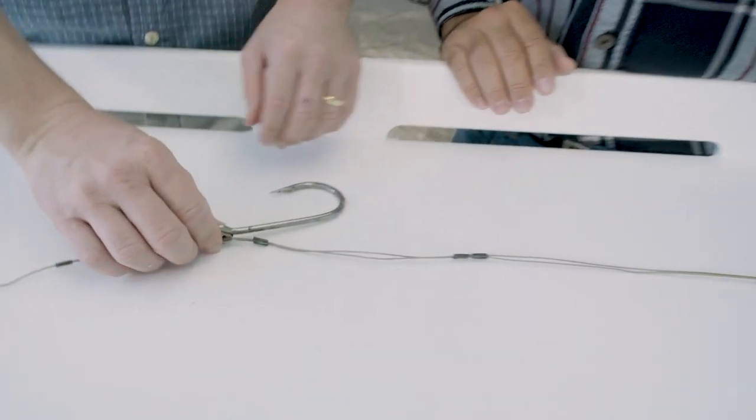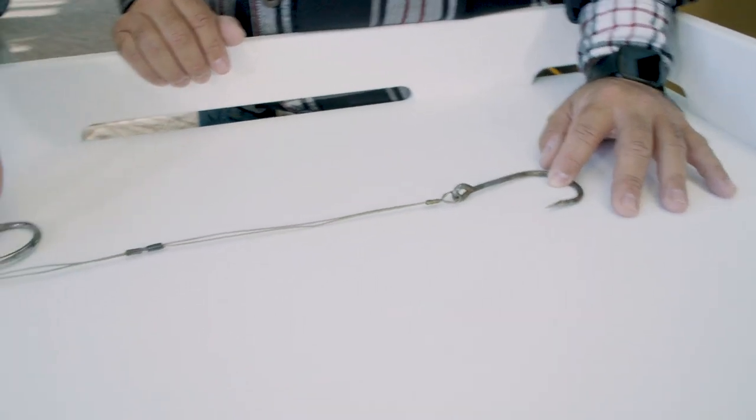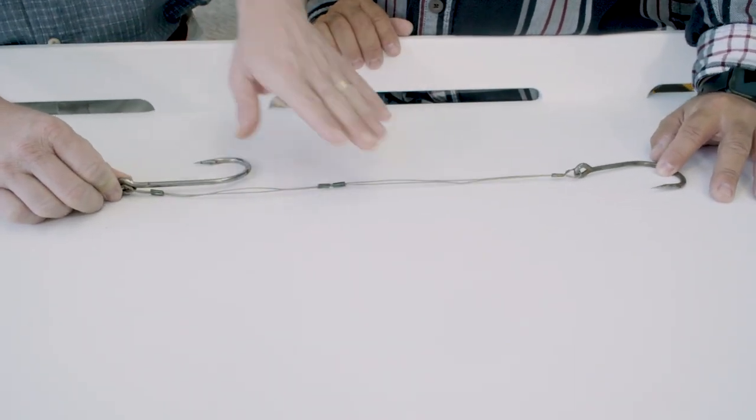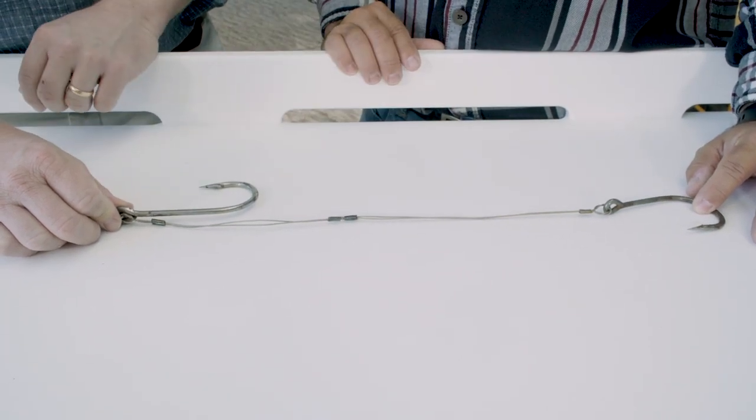That's correct, and this is an extreme example here. Obviously, you have a two hook rig here. IGFA rules state that between the eyes of the hooks, the two eyes for natural bait rigs, the distance can't be more than 18 inches.